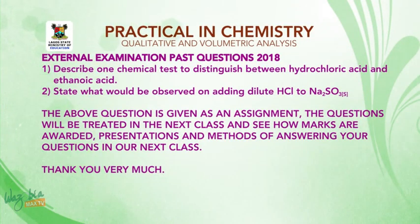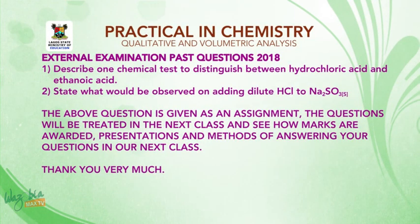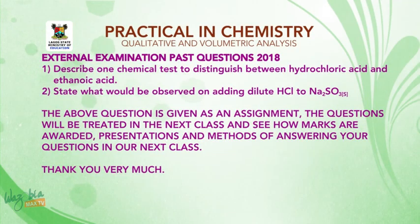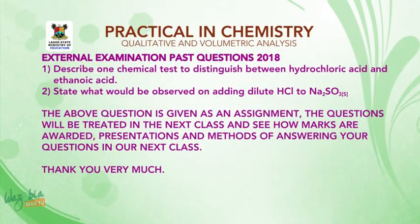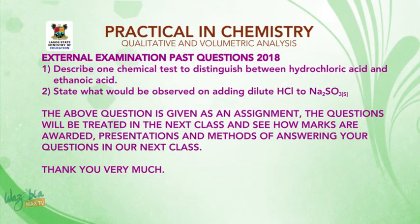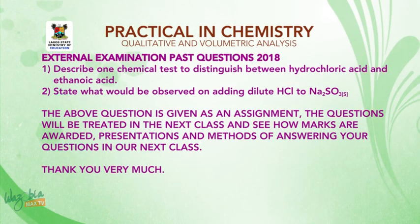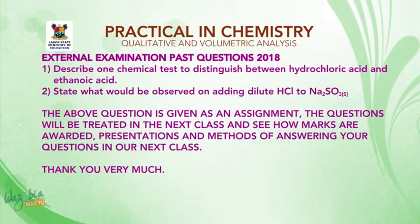Now let us look at some past questions. The 2018 question asks: describe one chemical test to distinguish between hydrochloric acid and ethanoic acid. The second question asks: what will be observed on adding dilute HCl to Na₂CO₃? These are given as an assignment. Next class we are going to solve these questions and see how marks are awarded, because presentation and method of answering your questions matters a lot. Thank you very much, have a wonderful day.